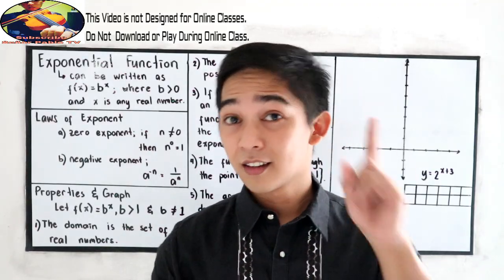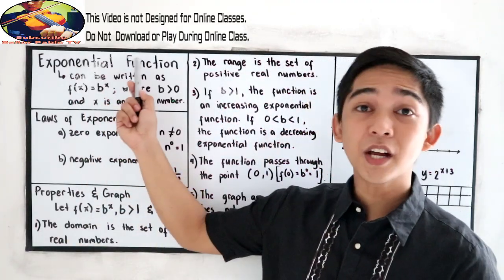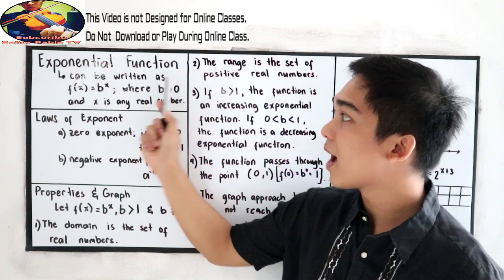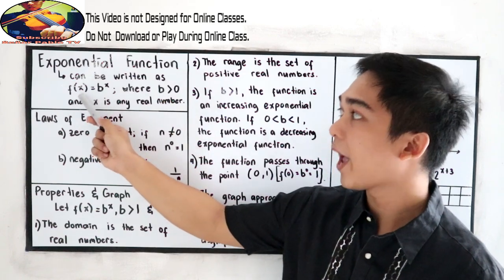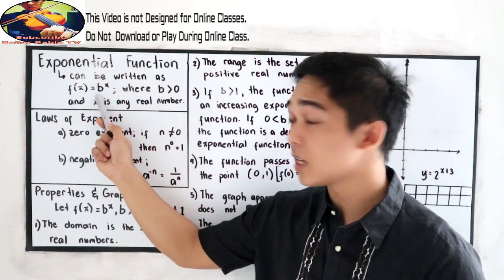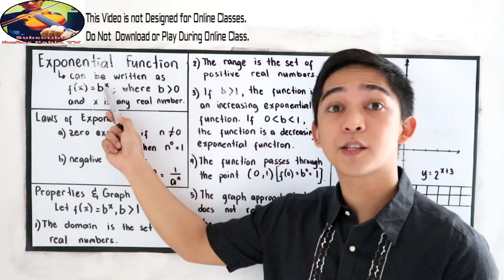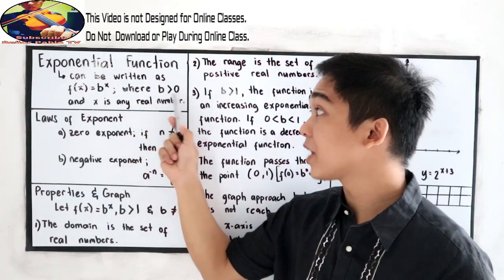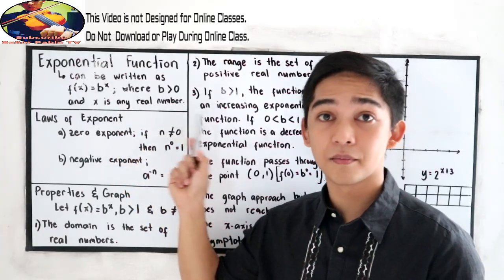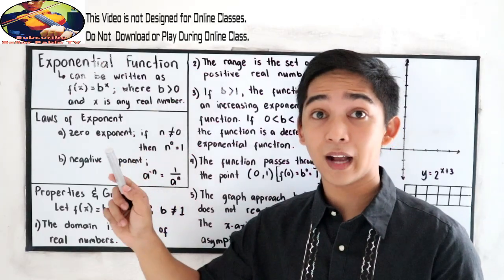Exponential function — let us define what it is. An exponential function can be written as f(x) = b raised to x, where b is our base and x is our exponent. Here, b must be greater than zero, and x is any real number — meaning it can be a decimal, fraction, or whole number.